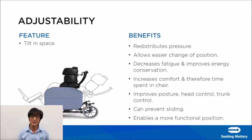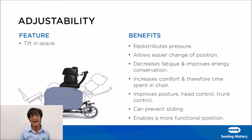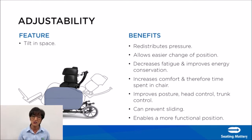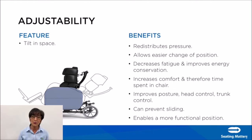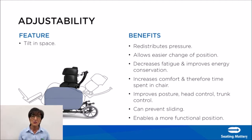Tilting space redistributes pressure — it takes pressure off vulnerable bony areas and redistributes it onto the back. Tilting space allows for easier change of position, either by the carer or by the person in the chair. It can decrease fatigue and improve energy, increasing time spent in the chair. It can improve posture, head control and trunk control, prevent sliding, and enable a more functional position. Every clinical therapeutic seat should have adjustable tilting space.